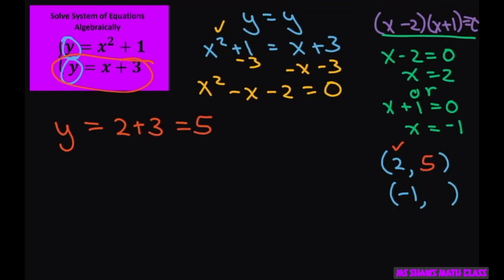And for the second one, we're going to get y equals x, which is negative 1 plus 3, that equals 2.